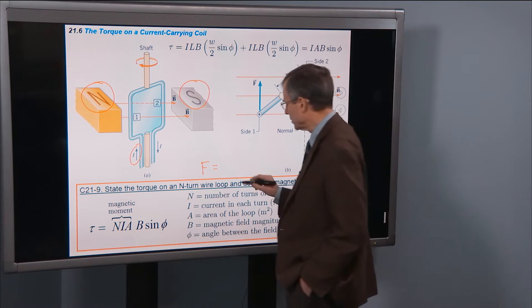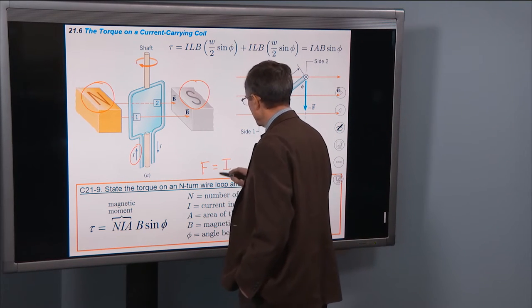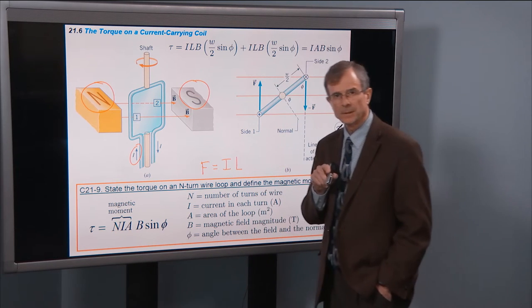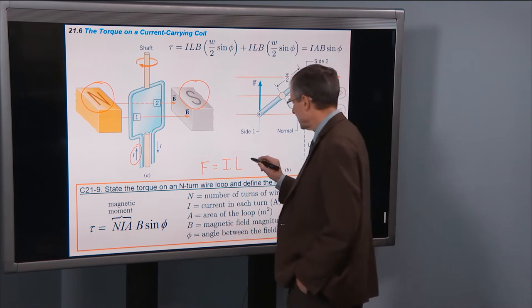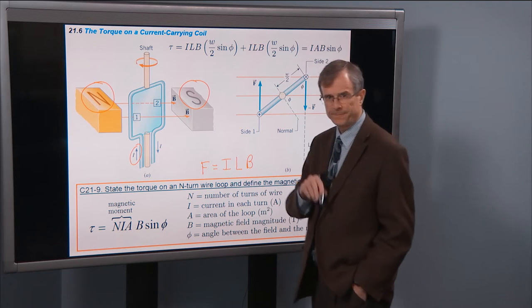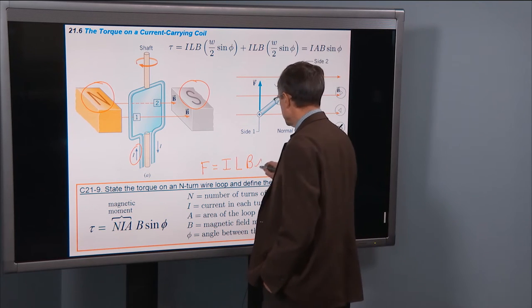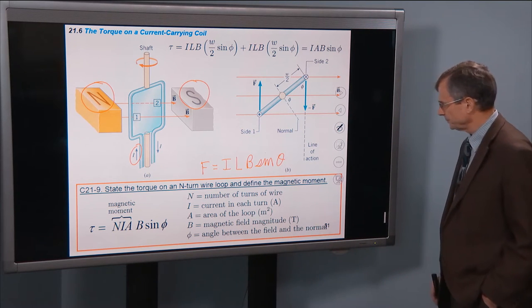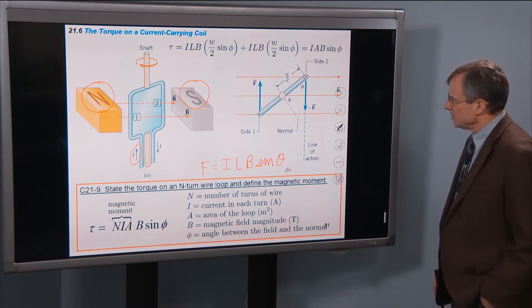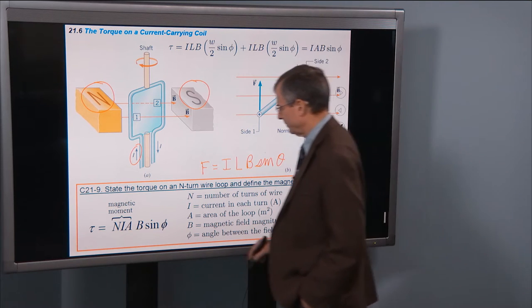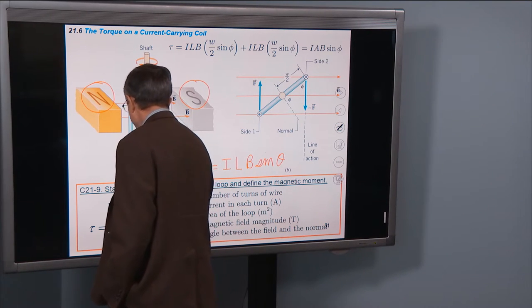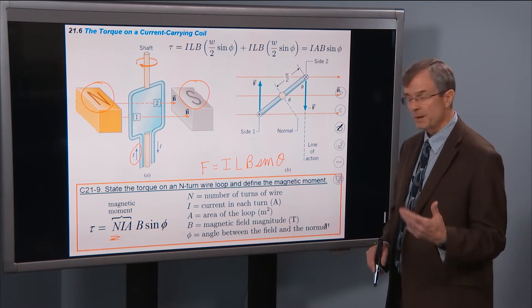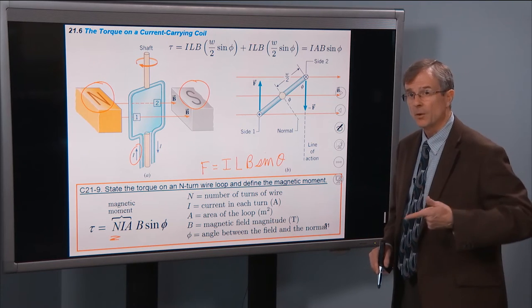For the force on a wire segment, it was the current times the length of the wire segment times the magnetic field times the sine of the angle. And we get a similar result here, except that if we have N-turns like we did in the example with the speaker, we've got to multiply that torque by the number of turns in that coil.